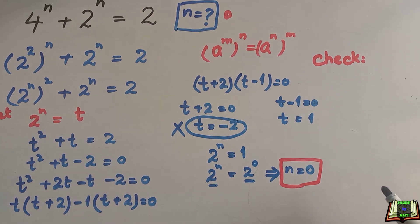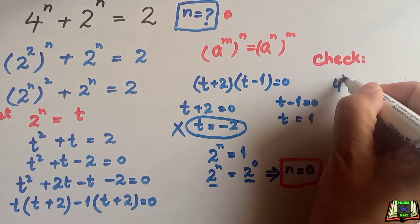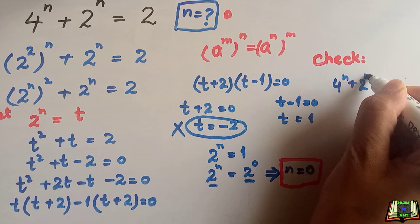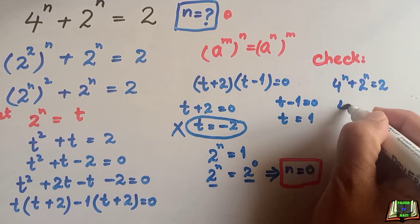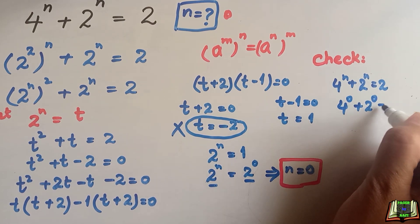The original equation is 4 to the power n plus 2 to the power n is equal to 2. Here we find the value of n is 0, so 4 to the power 0 plus 2 to the power 0 is equal to 2.